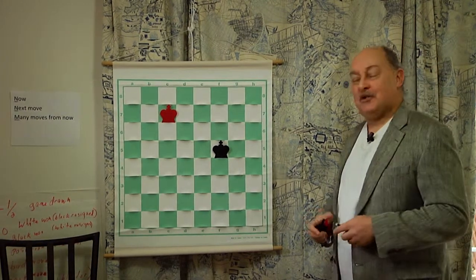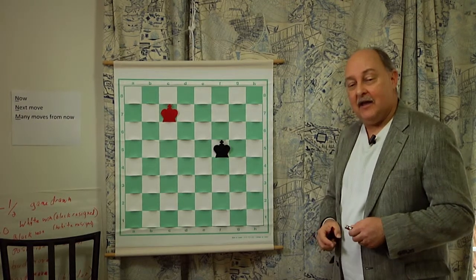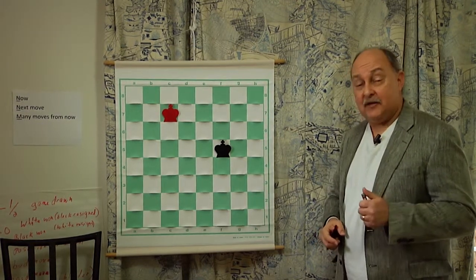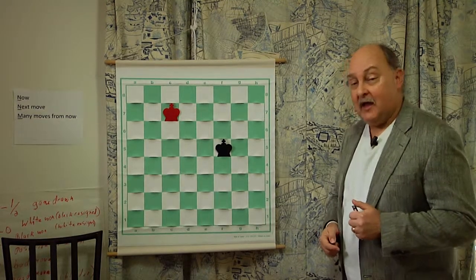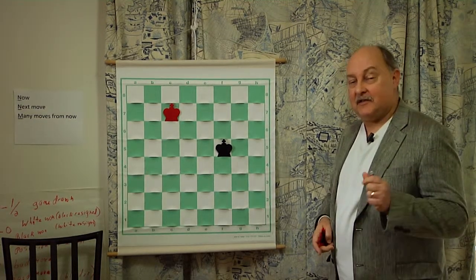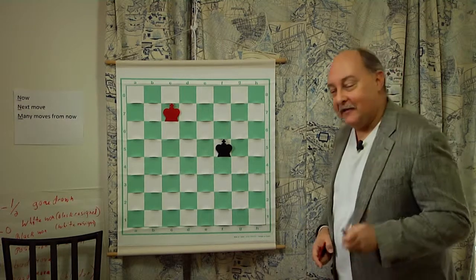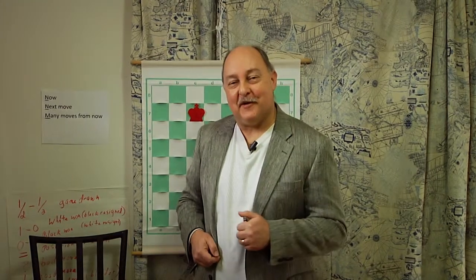And as a quick review, we'll just remember there are three ways to get out a check. Blocking the check, capturing the checking piece, and running the king to a safe square. Just because you can make a check does not mean you should make one. All right, this concludes our lesson here on check, checkmate, and the five different kinds of draws. Thanks so much for watching.